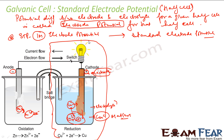So electrode potential is nothing but the potential difference between the electrode and the electrolyte for a given half cell. The concentration can be 2 moles, 3 moles, or any value; the temperature and pressure can be anything. But if you standardize those values — take 1 M concentration and 298 K temperature — then the electrode potential you get at those specific values becomes the standard electrode potential for that particular half cell.